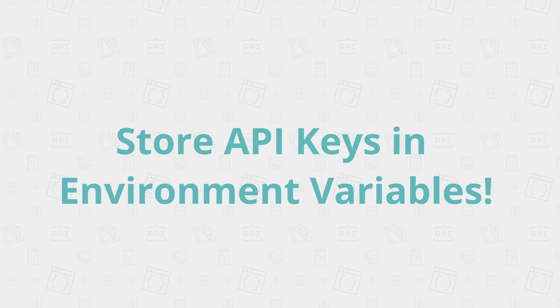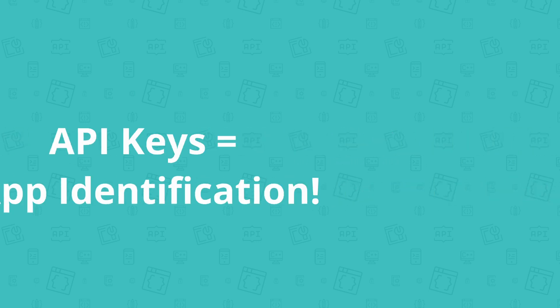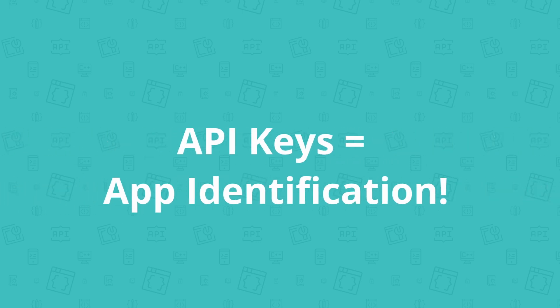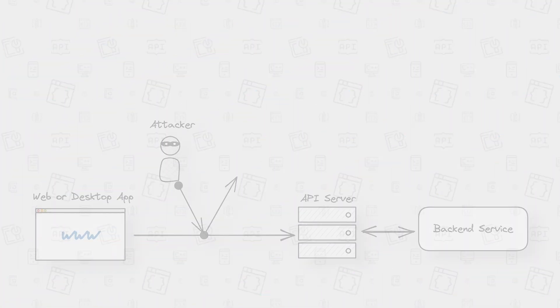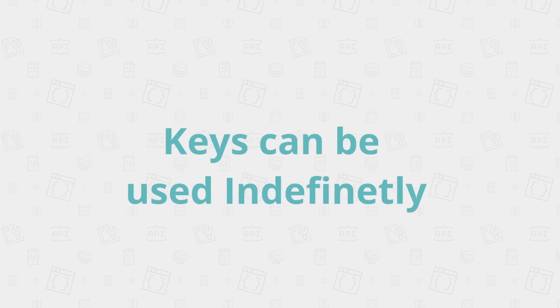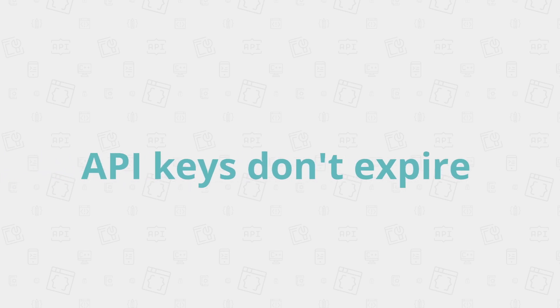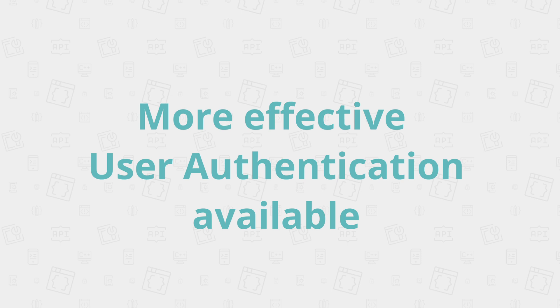Instead, you should always store your API keys in environment variables. The second easy-to-avoid rookie mistake is to confuse API keys for user authentication. API keys only identify applications — for user authentication, they're completely useless. API keys can easily be copy-pasted from a dev console or sniffed from unencrypted network traffic. And once that key is stolen, it can basically be used indefinitely because there is no expiration date. API providers could take countermeasures, but there are far more effective methods for user authentication.